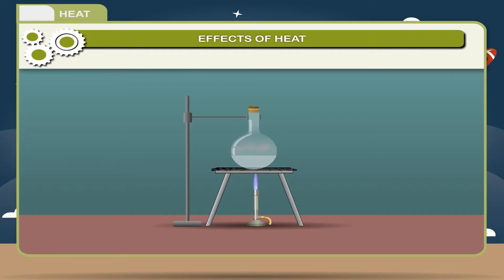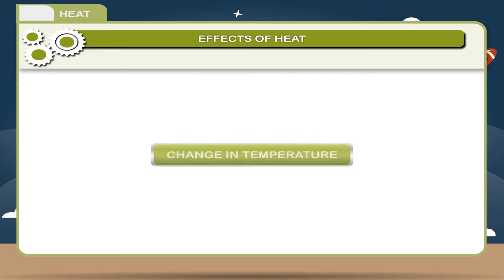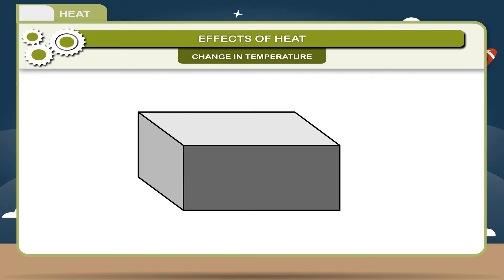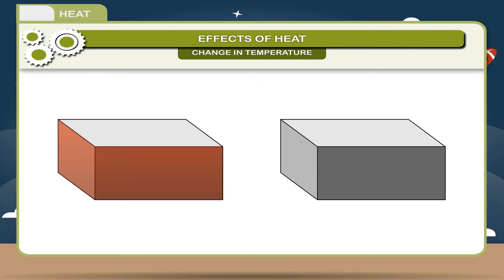Effects of Heat: When an object is heated, it undergoes many changes. Some of the effects can be felt and some cannot be. Change in Temperature: When a body is heated, its temperature rises, which depends upon the amount of heat received by the body from the source of heat. When a body is cooled, it loses heat energy and its temperature falls. The extent of rise or fall of temperature depends upon the quantity of heat gained or lost by it. We can say that if heat is the cause, temperature is the effect.